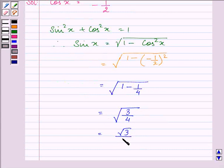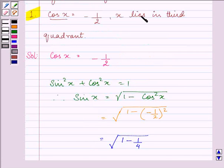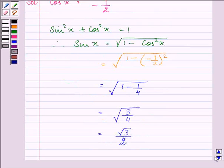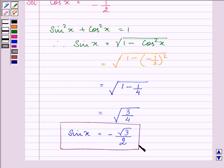Since it is given to us that x lies in the third quadrant, that means sin x is negative. So we have the value of sin x as minus root 3 by 2.